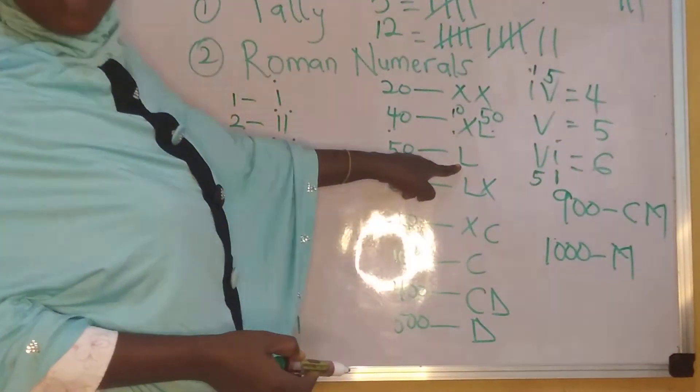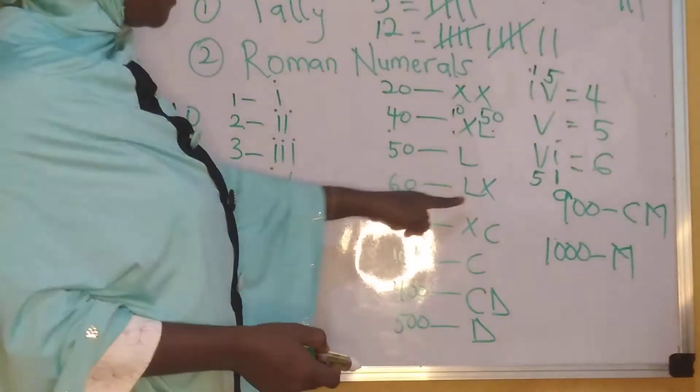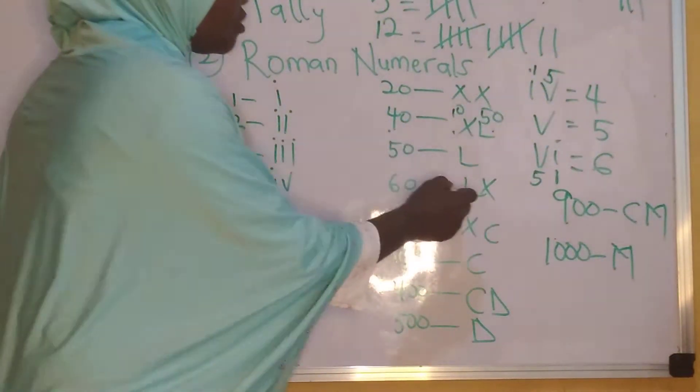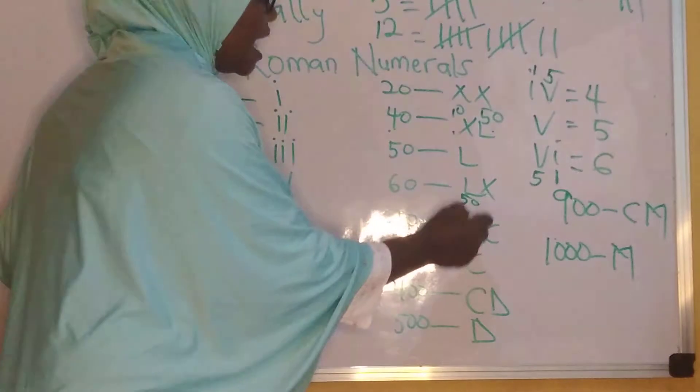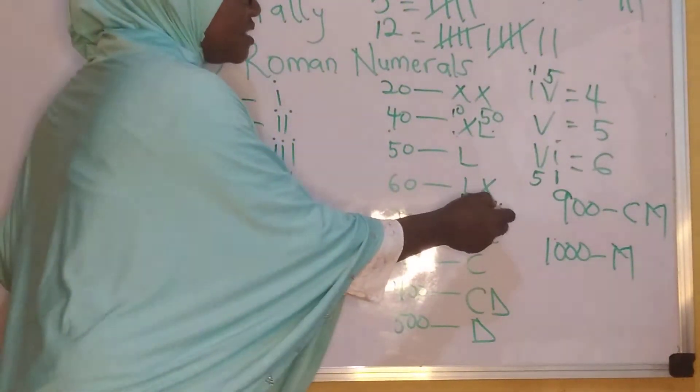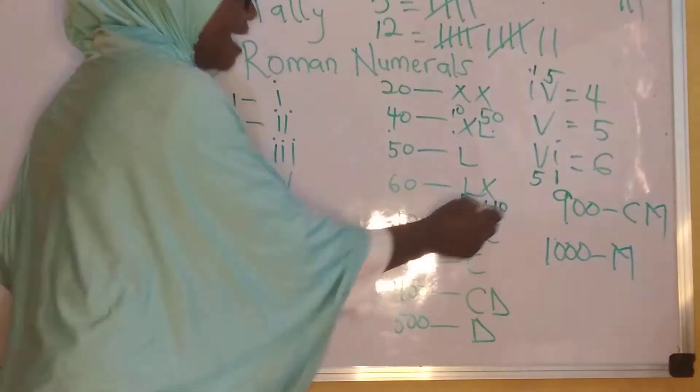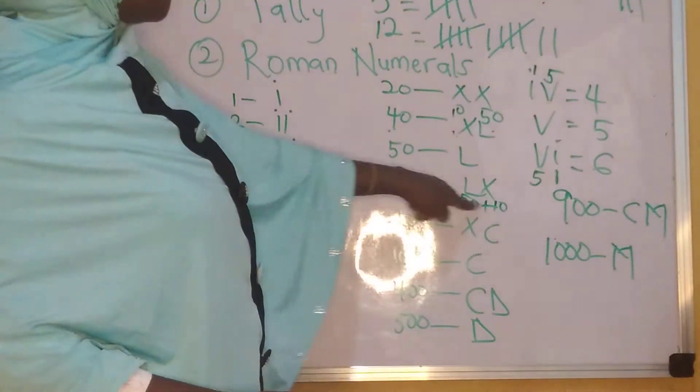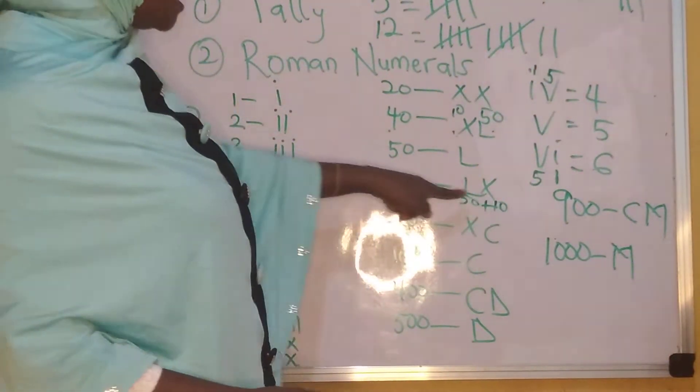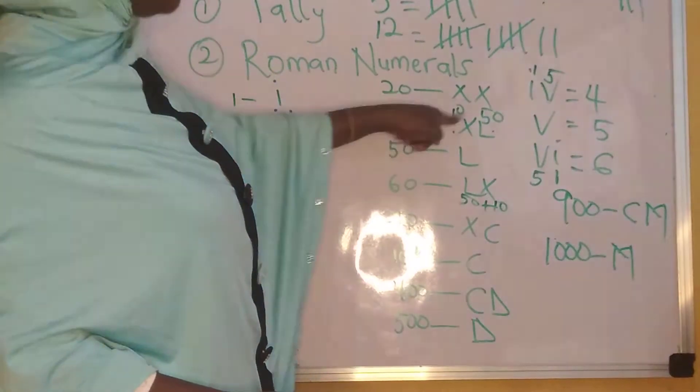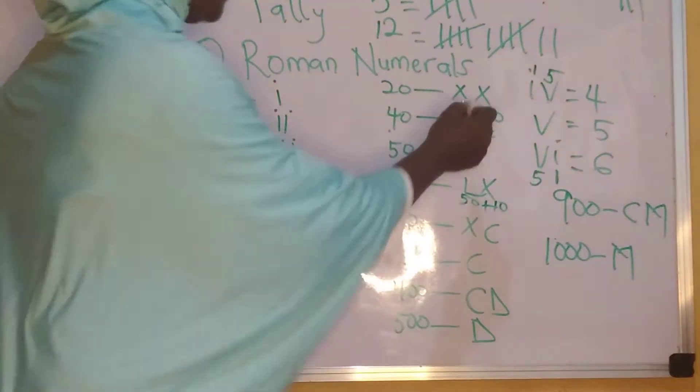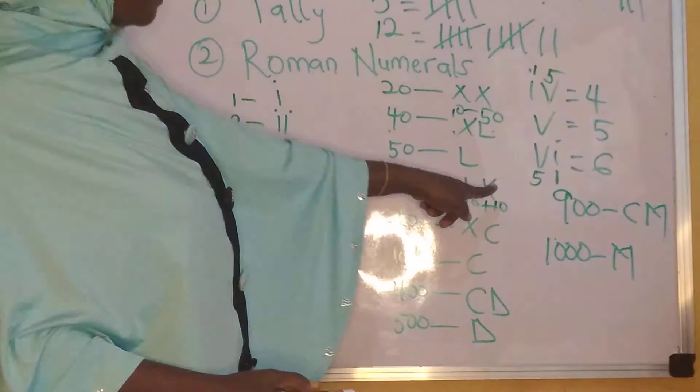Now, my 50 is L. My 60 is LX. Anytime you have a bigger number, which is 50, written first, and a smaller number written after it, that means you have to add. If you have a bigger number first and then a smaller number later, you add. But if you have a smaller number first and a bigger number, you subtract. That's why my 60 is LX.